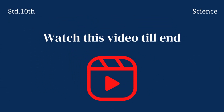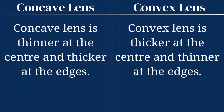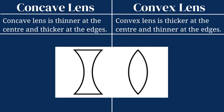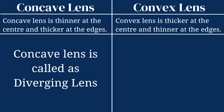I request all the students to watch this video till the end so that you understand each and every point properly. The first difference is in the structure: concave lens is thinner at the center and thicker at the edges, while convex lens is thicker at the center and thinner at the edges. Just have a look at this — this is how concave and convex lens looks like. Concave lens is known as a diverging lens, while convex lens is known as a converging lens.